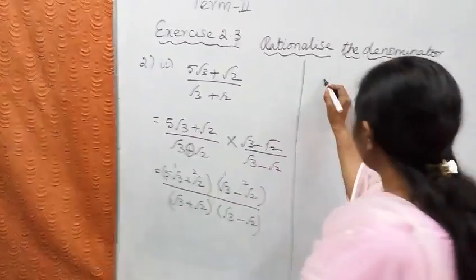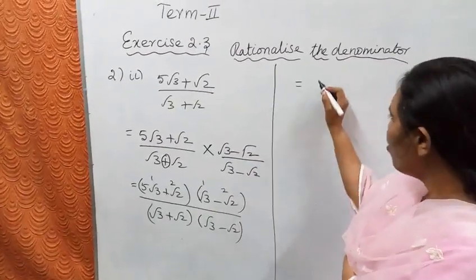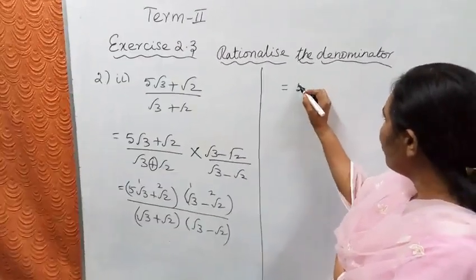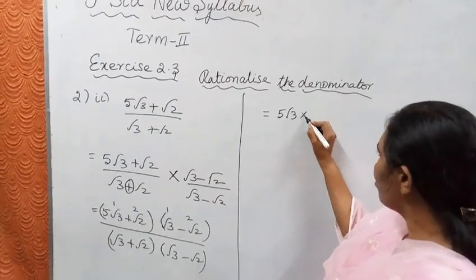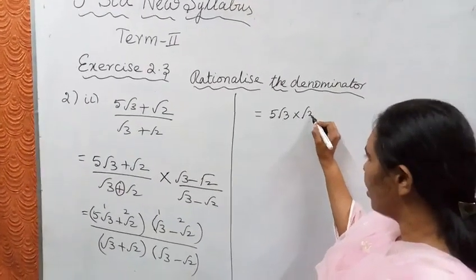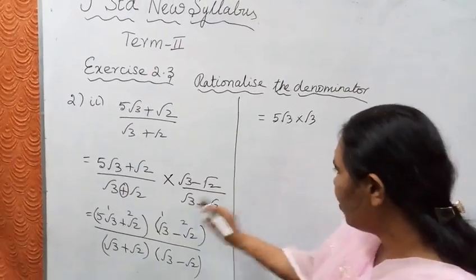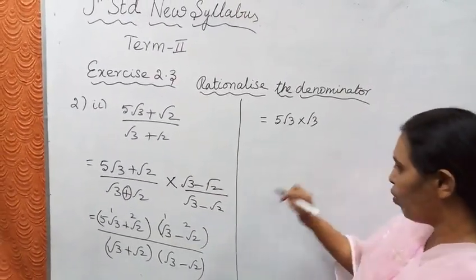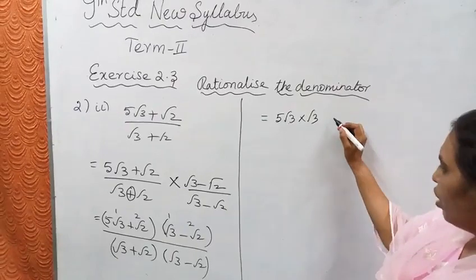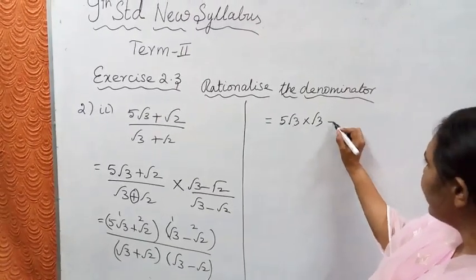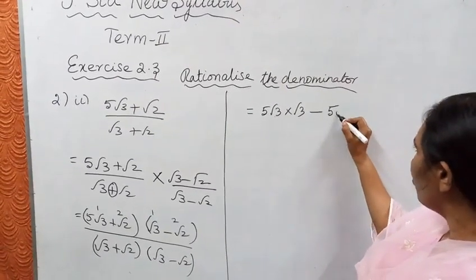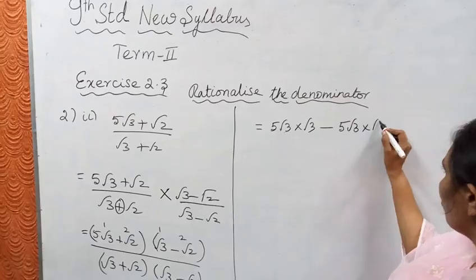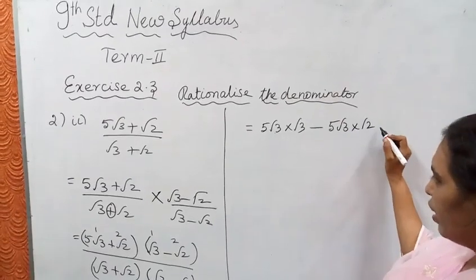Now multiply the numerator terms. 5√3 into √3, then minus 5√3 into √2.